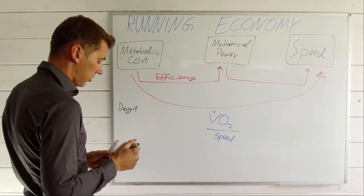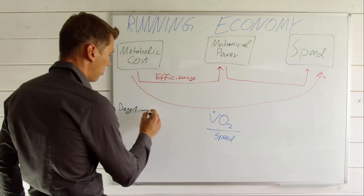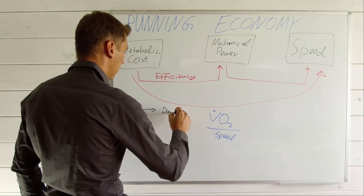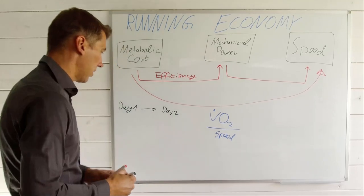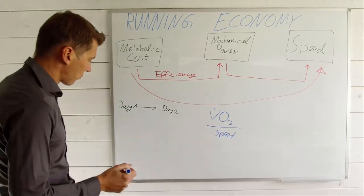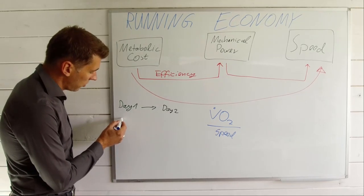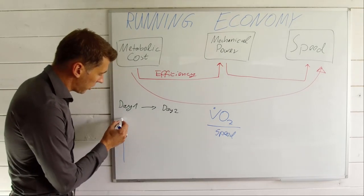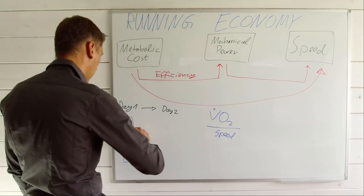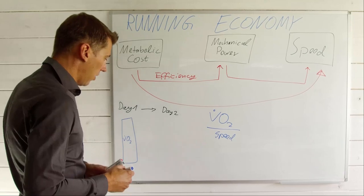So let's assume you go into a lab, you get it measured day one, you go into a lab at a certain running speed, you do a training and maybe come back later after two months, three months, four months, one year whatsoever. And let's assume at a certain speed you measure a certain amount of oxygen uptake. This is your VO2.